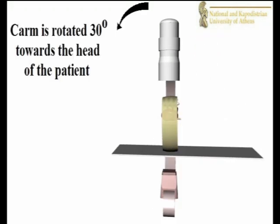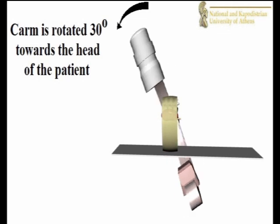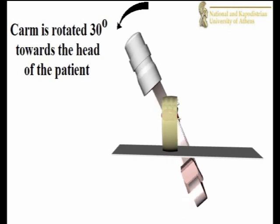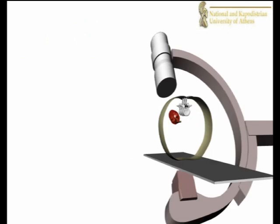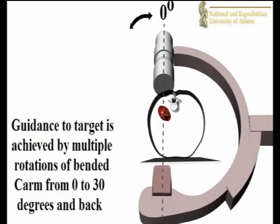In clinical practice, in order to decrease radiation to the surgeon, the C-arm is angled away from the line of puncture with the image intensifier angled towards the head of the patient.